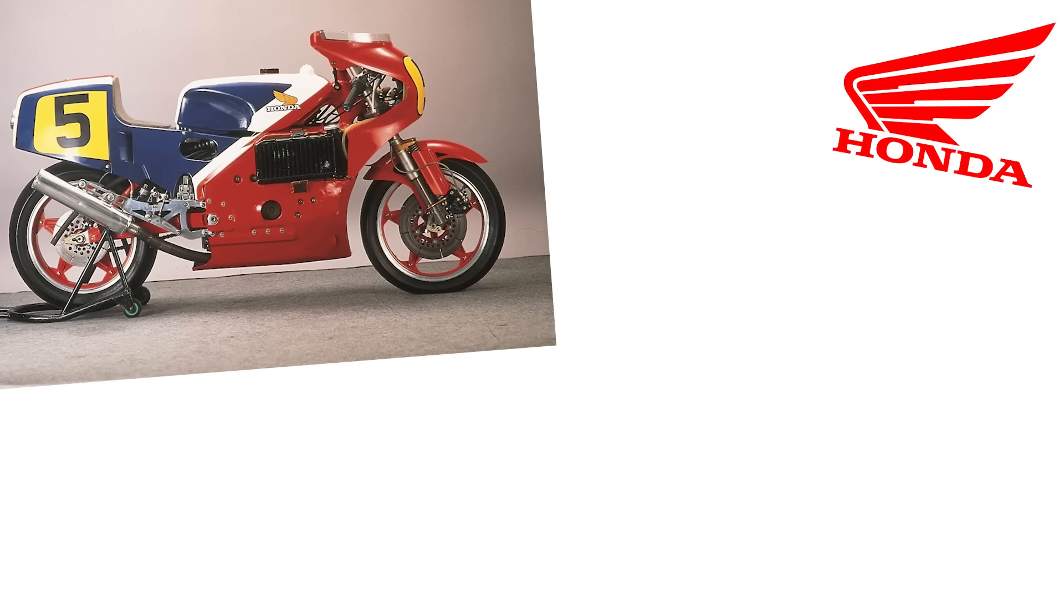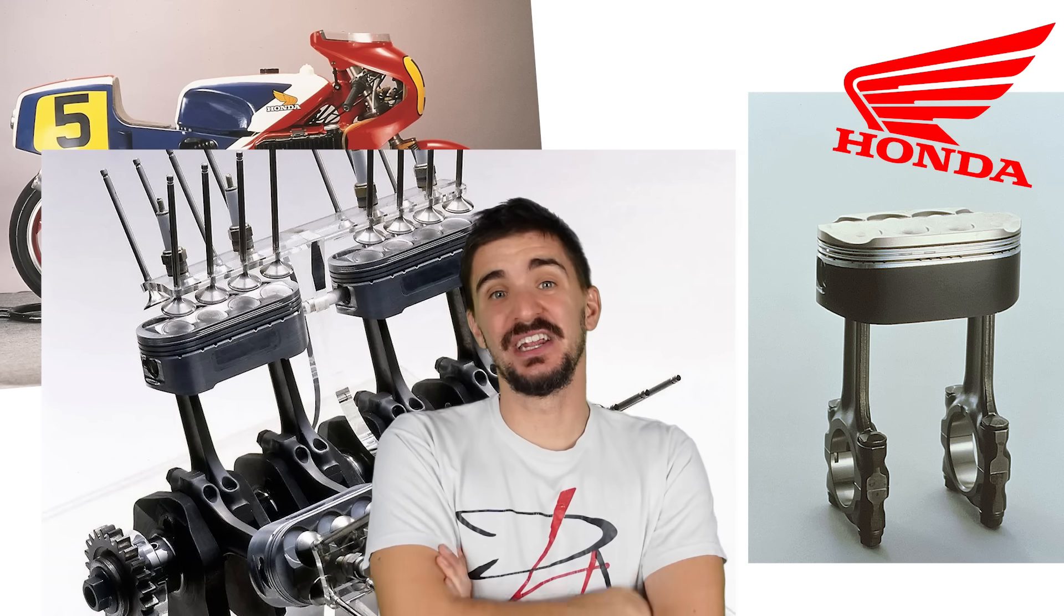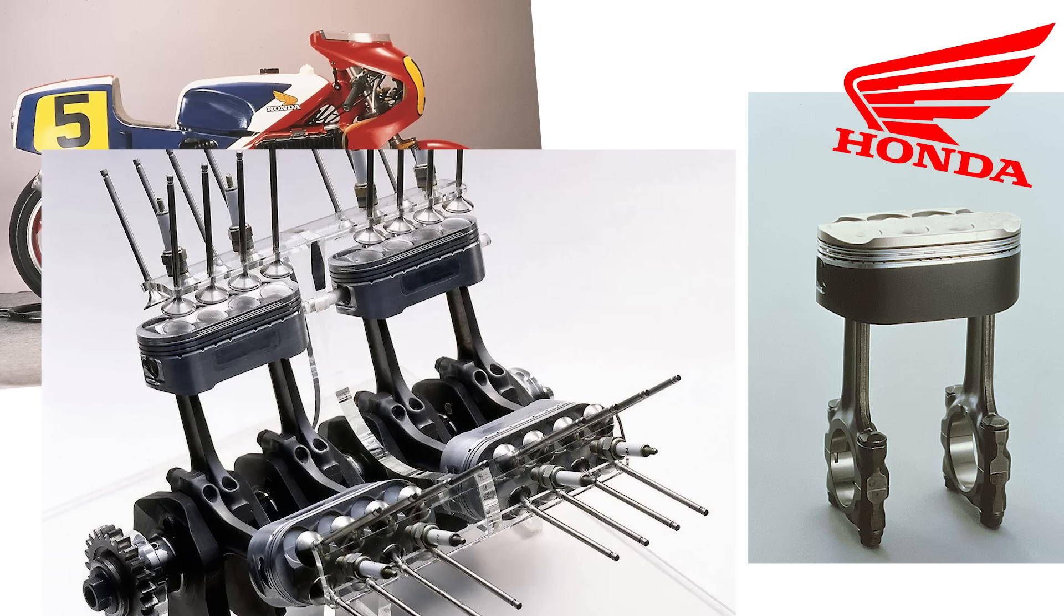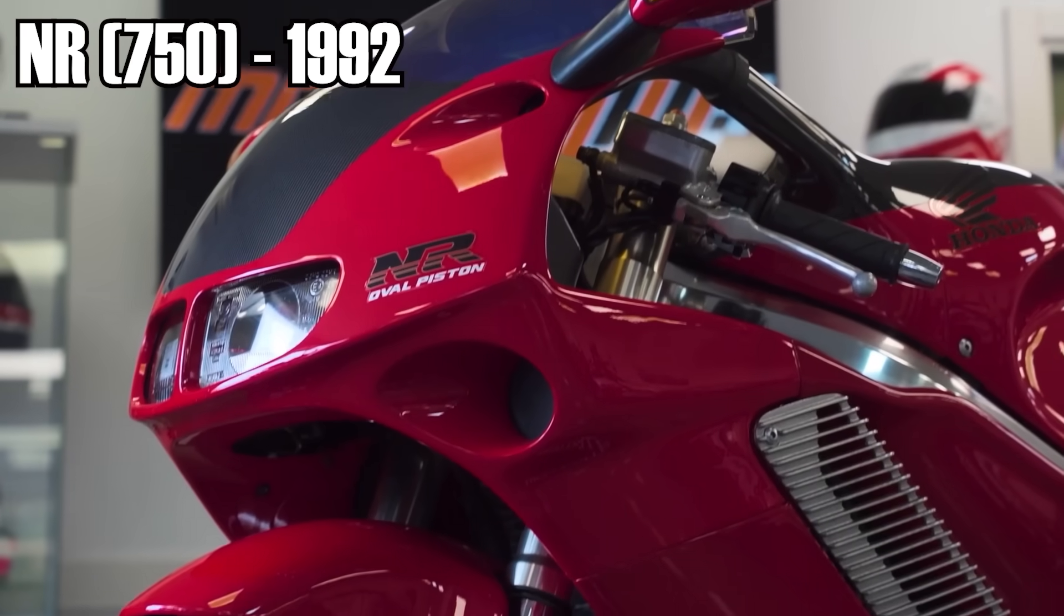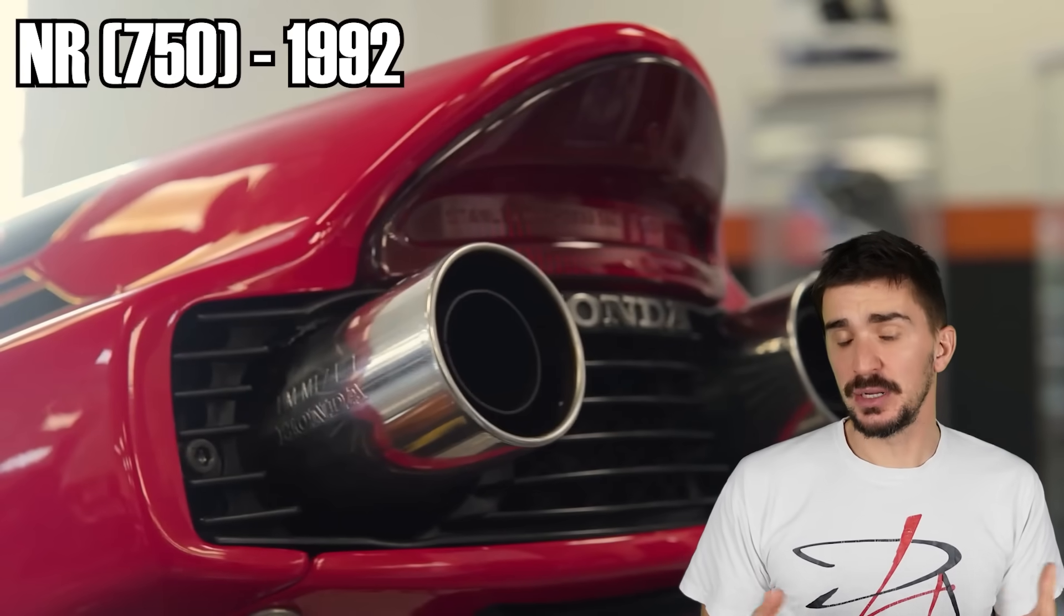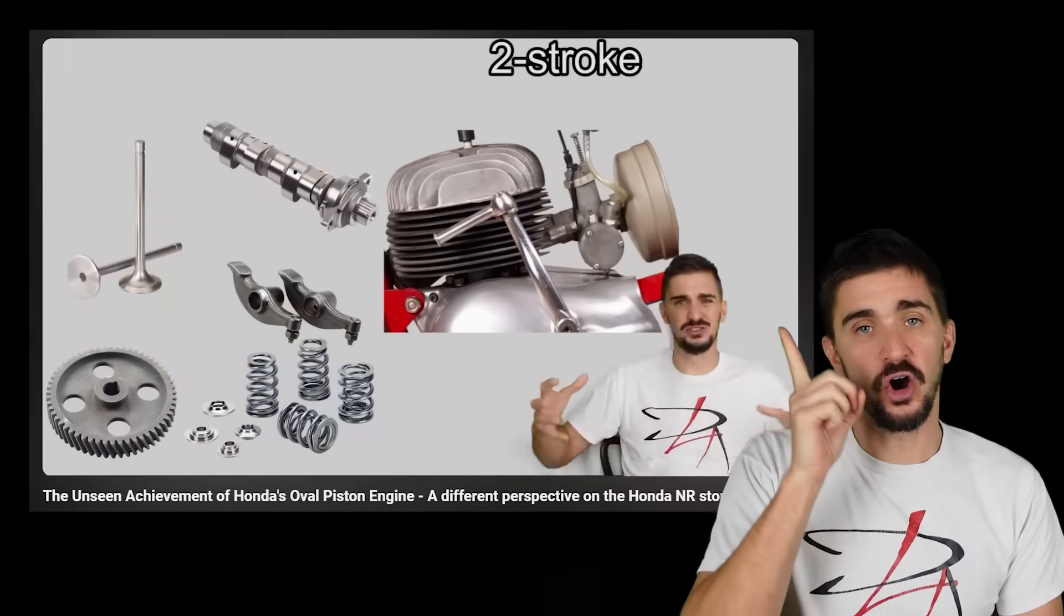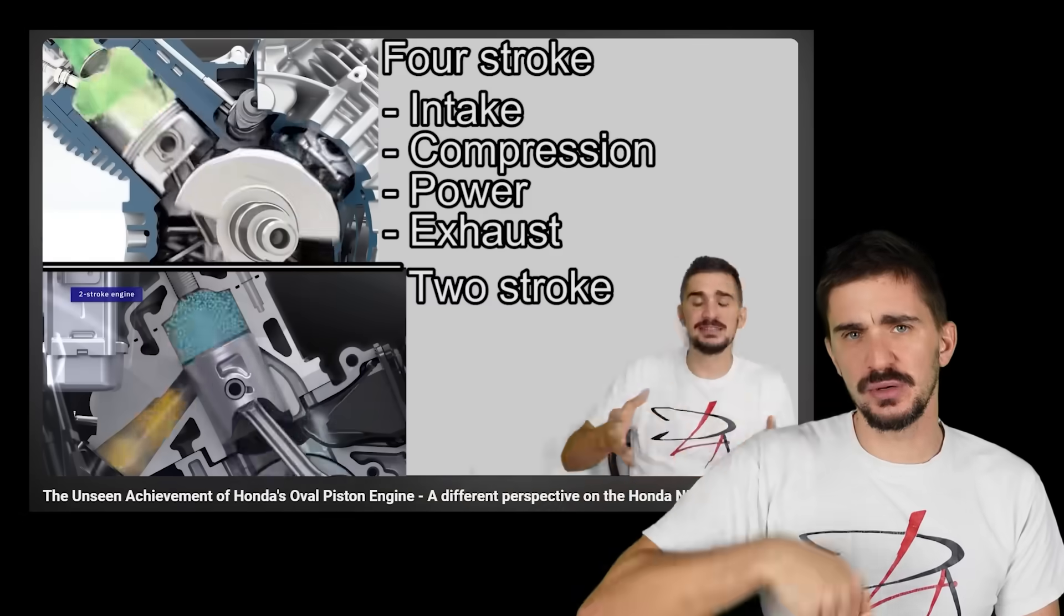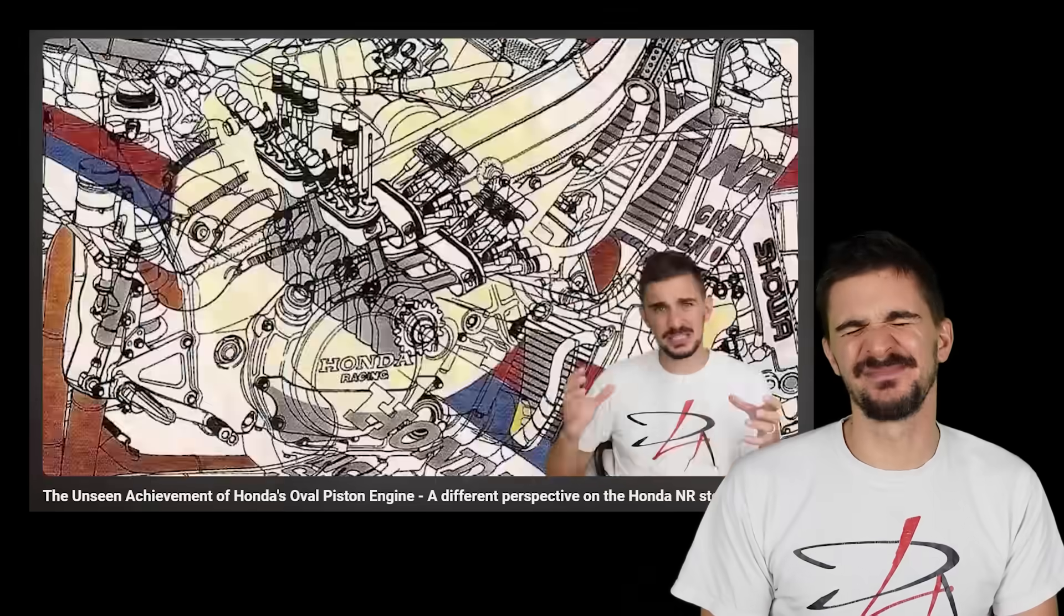Now, Ferrari's oval slash pill-shaped piston patent is definitely not the first attempt at oval pistons. Back in the late 70s, Honda made grand prix racing bikes with oval pistons in an attempt to compete against two-stroke engines, which back then were not given an unfair displacement disadvantage. And Honda's oval piston love affair culminated in the NR 750 production bike in 1992.